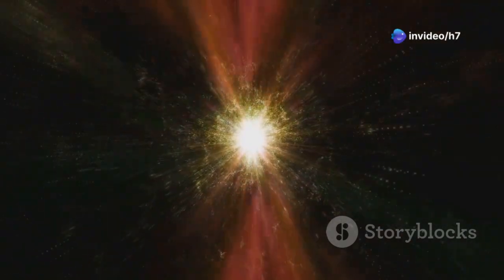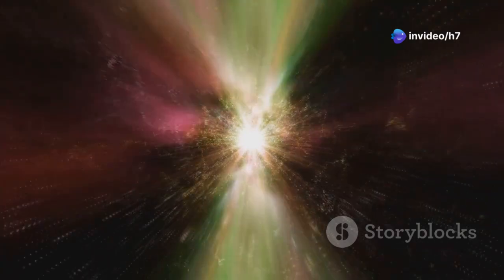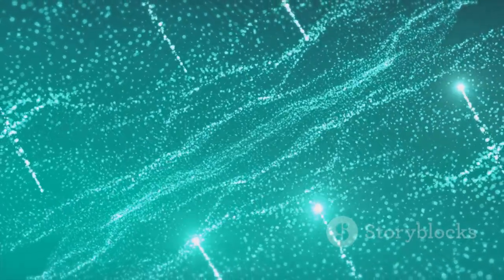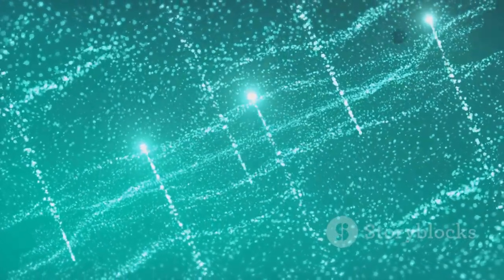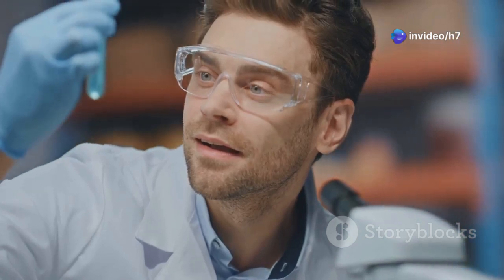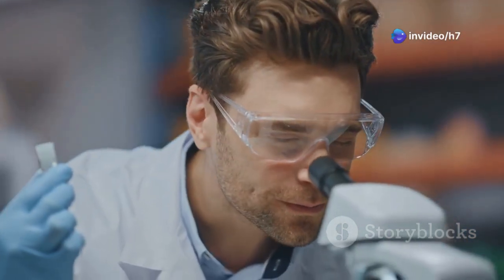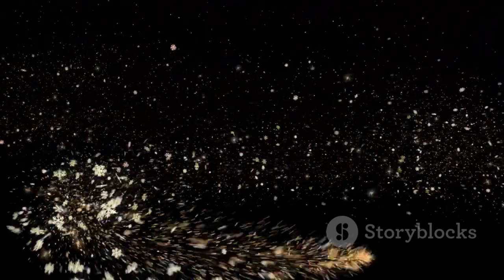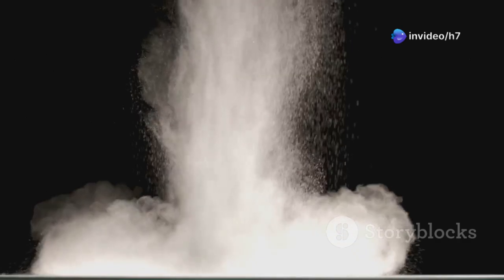To grasp the strangeness of this phenomenon, imagine sending individual photons, one by one, through the double slits. One might expect each photon to pass through either one slit or the other, resulting in two distinct bands on the screen. However, the experiment reveals something far more intriguing. Even when photons are sent one at a time, the interference pattern gradually emerges on the screen, indicating that each photon somehow interferes with itself.